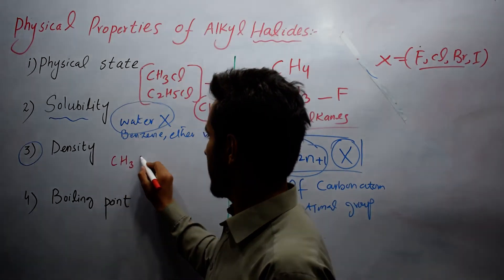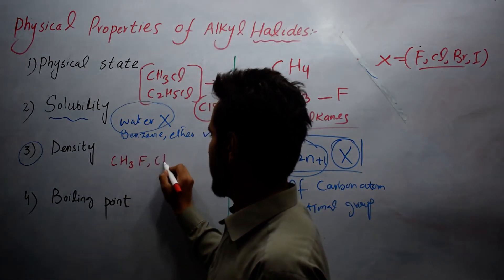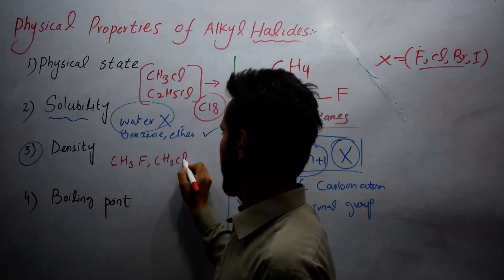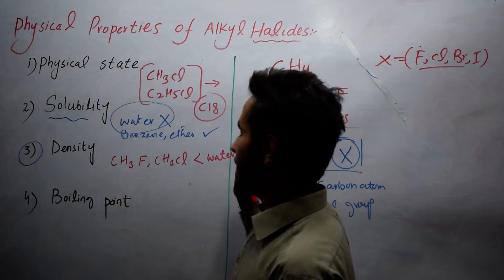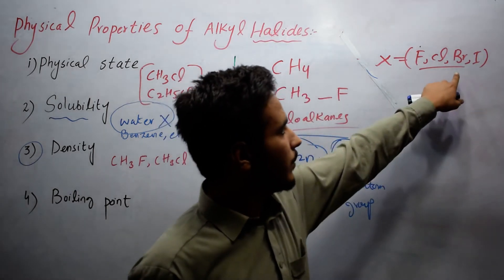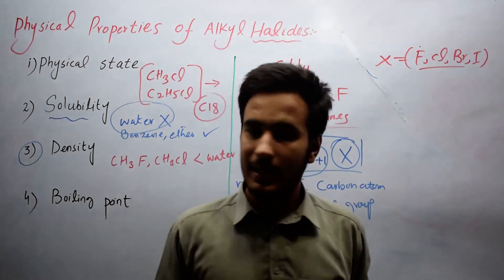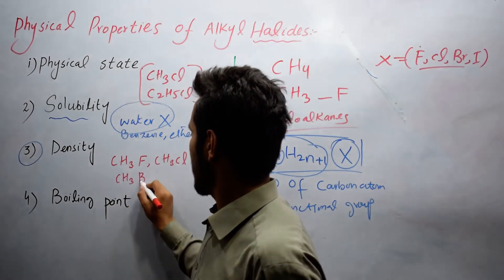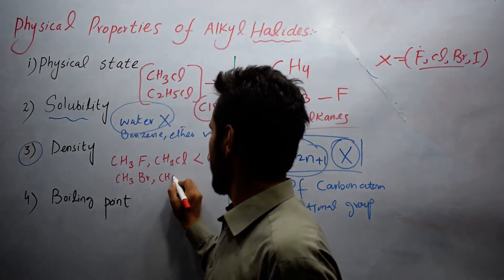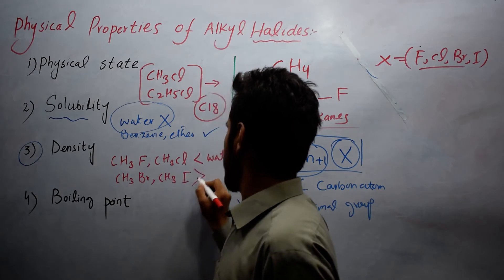Alkyl CH3F and CH3Cl are lighter than water, but the density of alkyl bromide and alkyl iodide, CH3Br and CH3I, is greater than water.